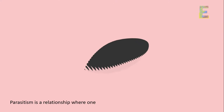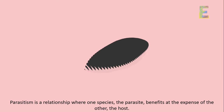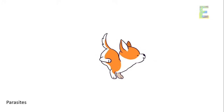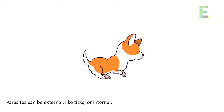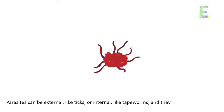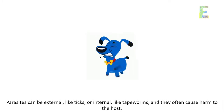Parasitism is a relationship where one species, the parasite, benefits at the expense of the other, the host. Parasites can be external, like ticks, or internal, like tapeworms, and they often cause harm to the host.